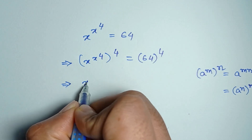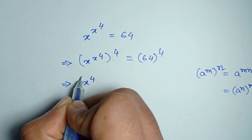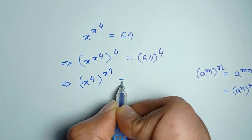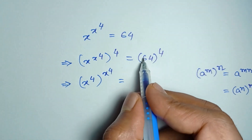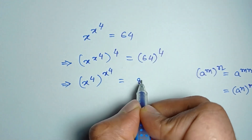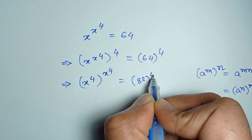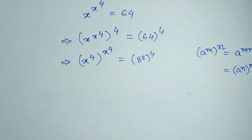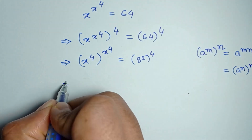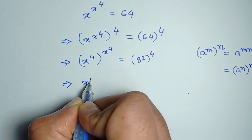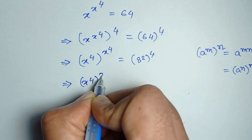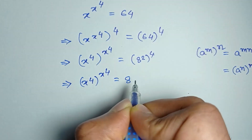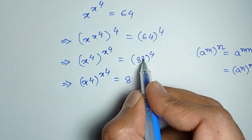From here we get x to the power 4, whole to the power x to the power 4, is equal to — and 64 can be written as 8 squared, whole to the power 4 — so x to the power 4, whole to the power x to the power 4, is equal to 8 to the power 8.